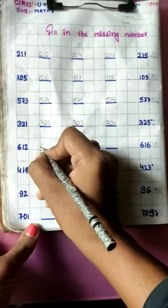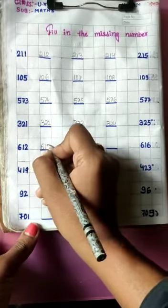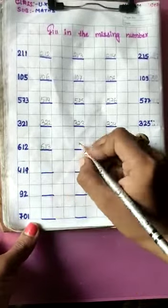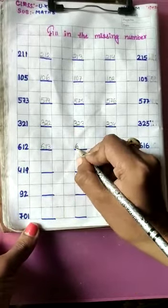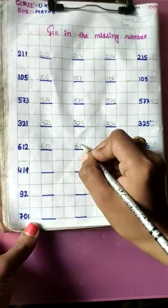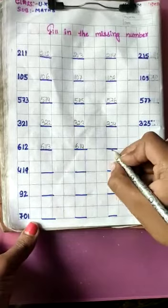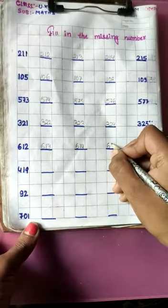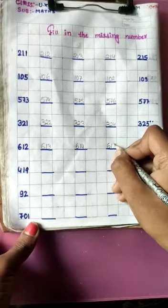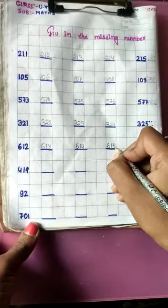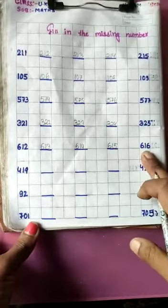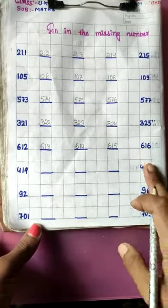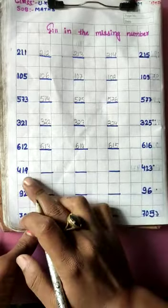Now next line: 612, 613, 614. Now next: 615, 616.